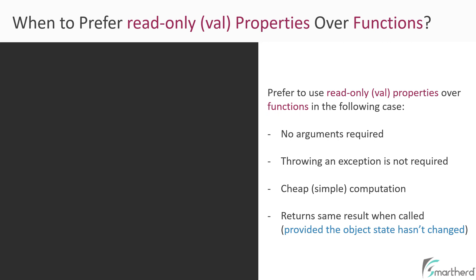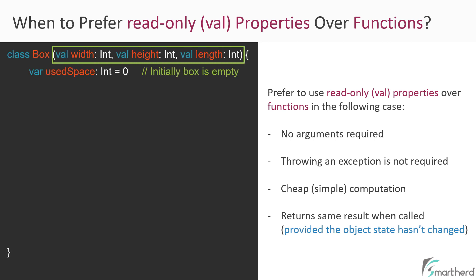Let me show you an example. Suppose we have a class Box with three properties: width, height, and length. These are declared using val keyword, which means once we define their values during object creation, their values will never change. They will be just read-only. Next we have another property used space, which is initially zero, which means initially our box is empty. Notice that it is declared using var keyword, which means the value of this property can change in future.